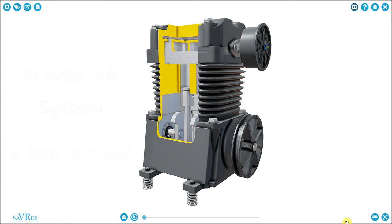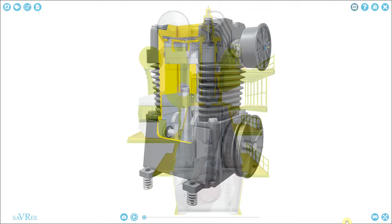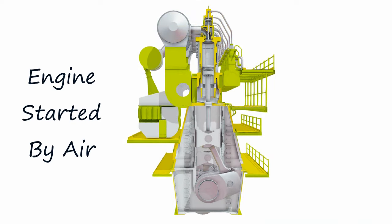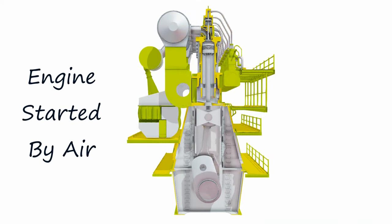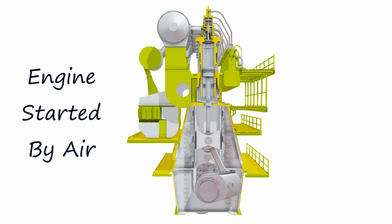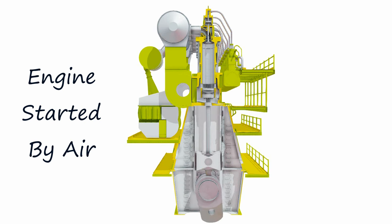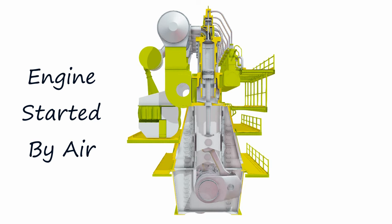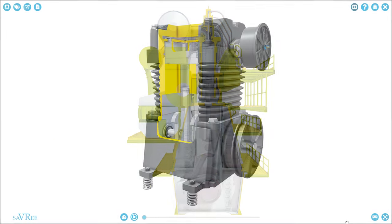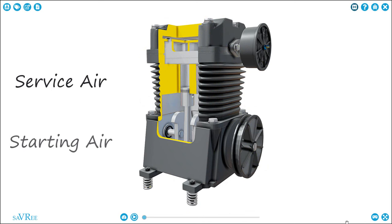We might use compressed air for things like starting an engine. Many medium and large sized internal combustion engines are rotated initially by compressed air. Once they're rotating, once they're in motion, fuel can be injected, we get combustion, and these engines then can maintain or increase their speed using the chemical energy released during combustion. So service air and starting air for combustion engines are typical uses of compressed air, and both are classified as compressed air systems.